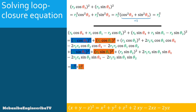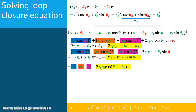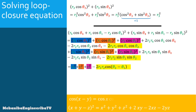After combining, R1²·cos²θ1 + R1²·sin²θ1 = R1², and R2²·cos²θ2 + R2²·sin²θ2 = R2². Also, 2R1R2·cos θ1·cos θ2 + 2R1R2·sin θ1·sin θ2 = 2R1R2·cos(θ2 − θ1), using the trigonometric identity cos(X − Y) = cos X·cos Y + sin X·sin Y.